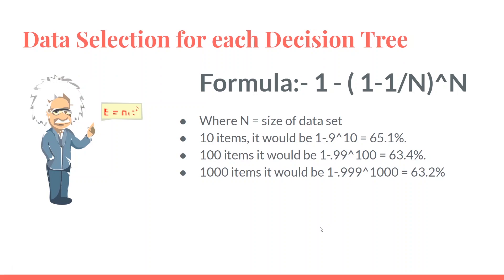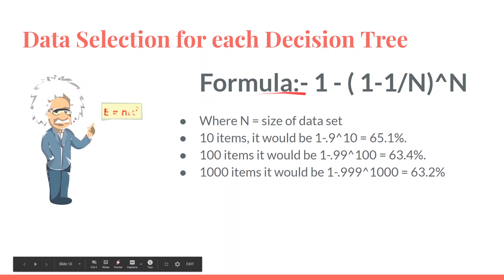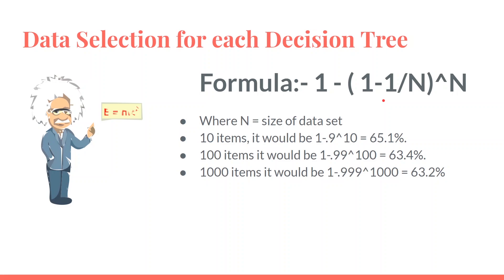To determine what percentage of training data to feed to each decision tree, we use a specific formula. For 10 items it gives about 65%, so we feed 6 or 7 items per tree. For 100 items it gives 63%, and for 1000 items it also converges to 63%. So approximately 63% is the converged percentage of training data fed to each decision tree.